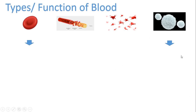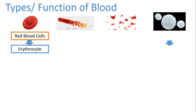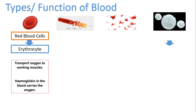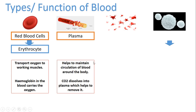We have different types of blood cells in the body and there are four you need to know about. Red blood cells, also known as erythrocytes, transport oxygen to the working muscles — the haemoglobin in the blood carries this oxygen. You also have plasma, which is the fluid substance in your blood. It helps to maintain circulation of blood, almost acting like a lubricant, and carbon dioxide dissolves into the plasma which helps us to get rid of it out of our body.